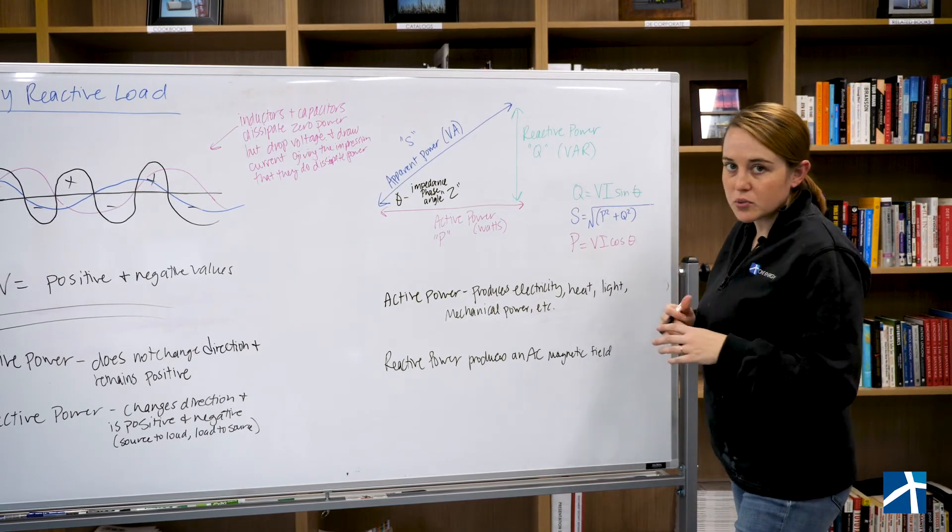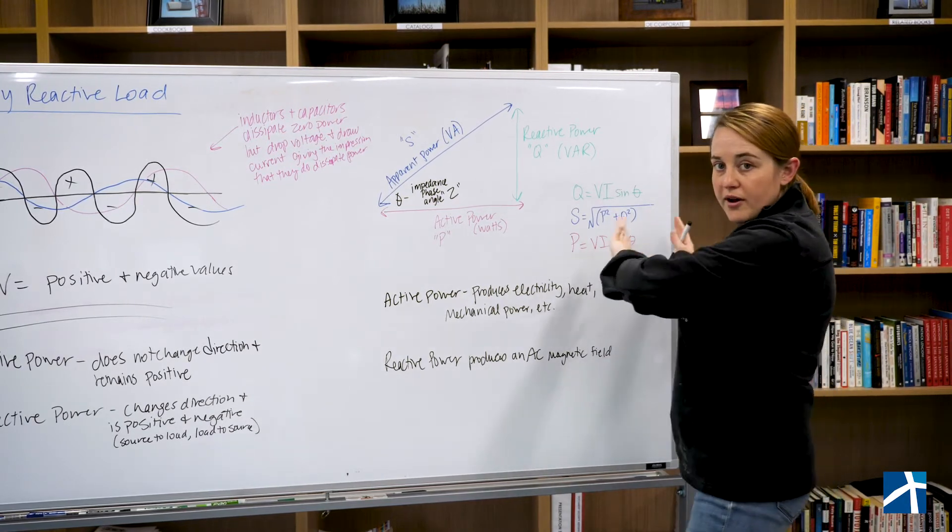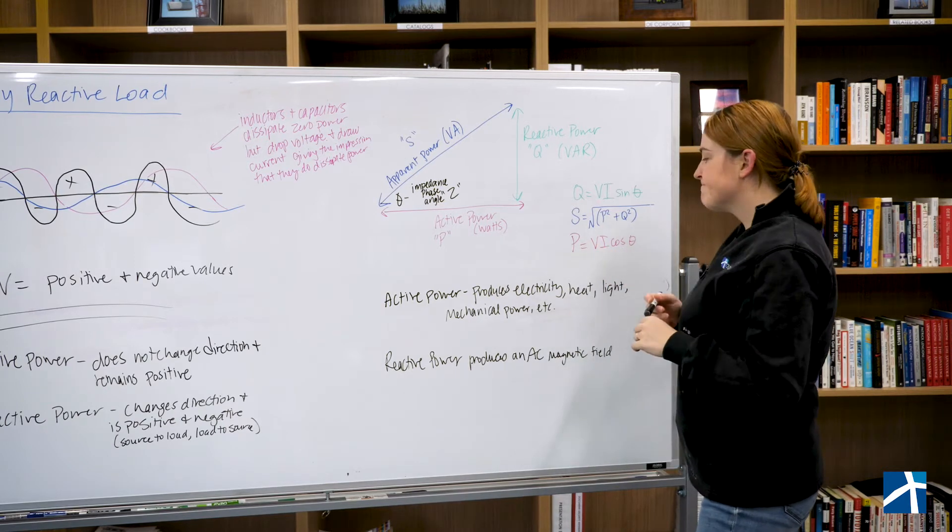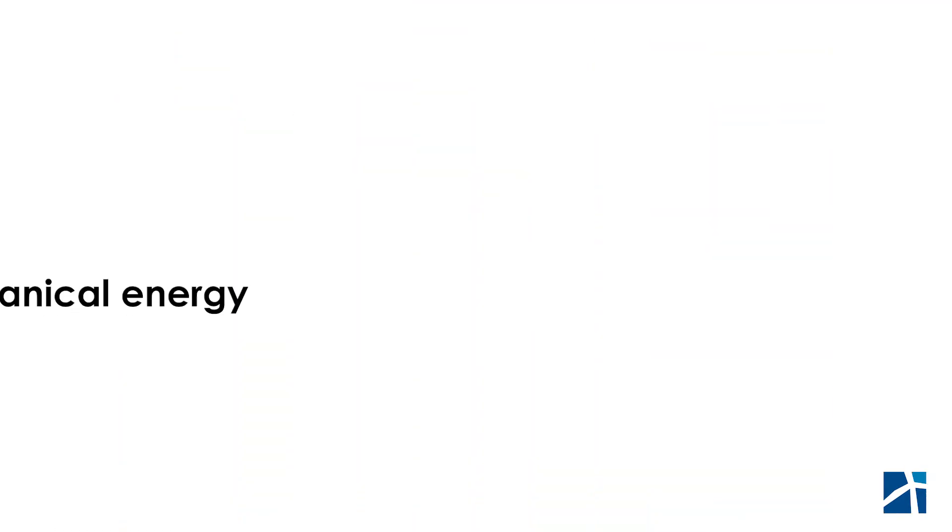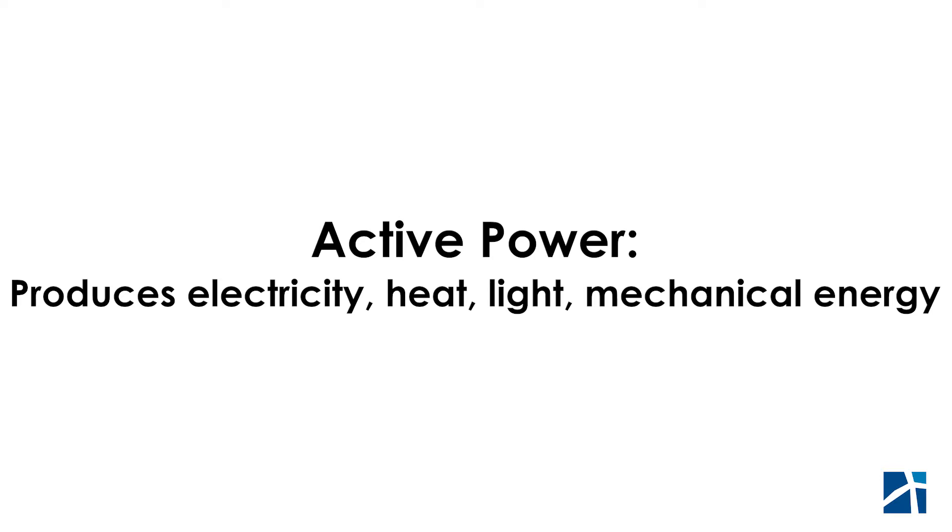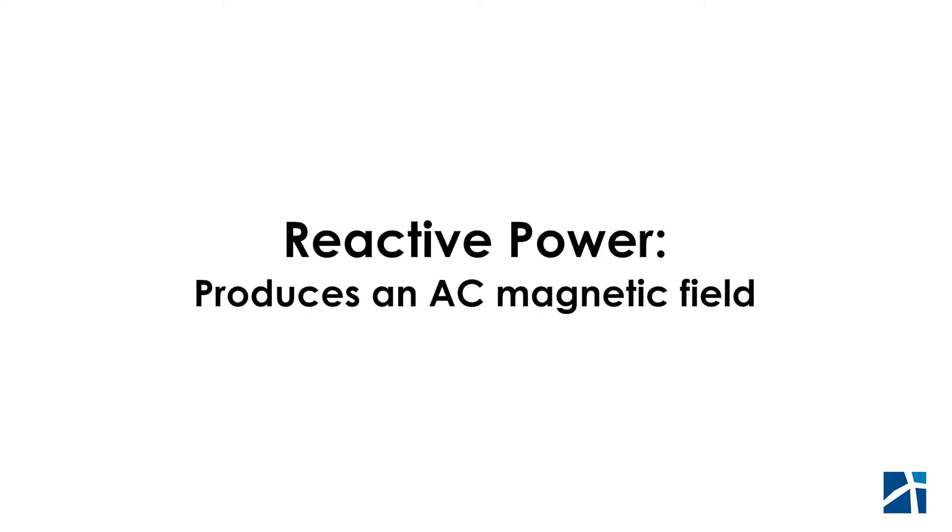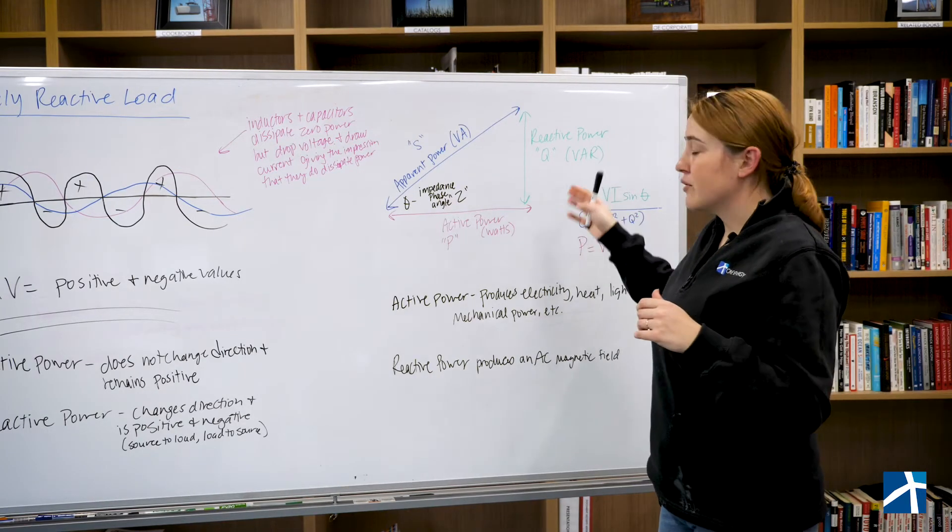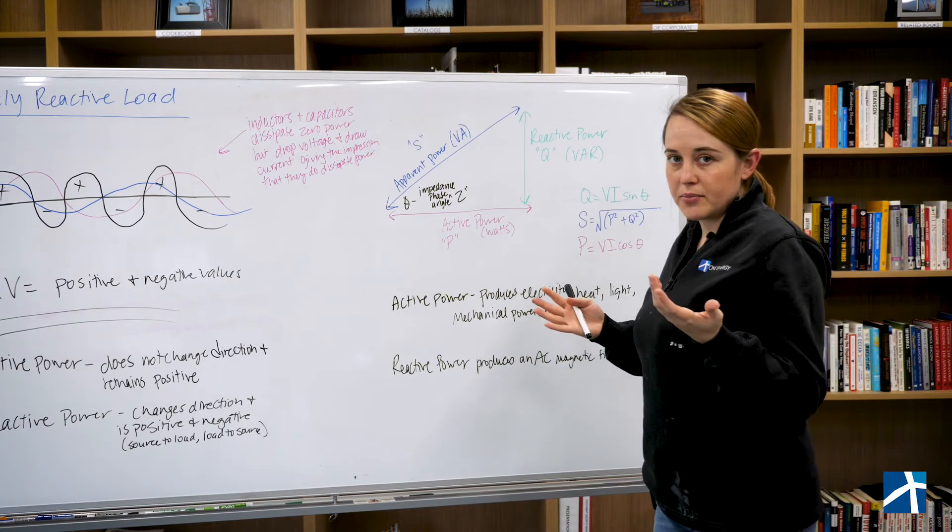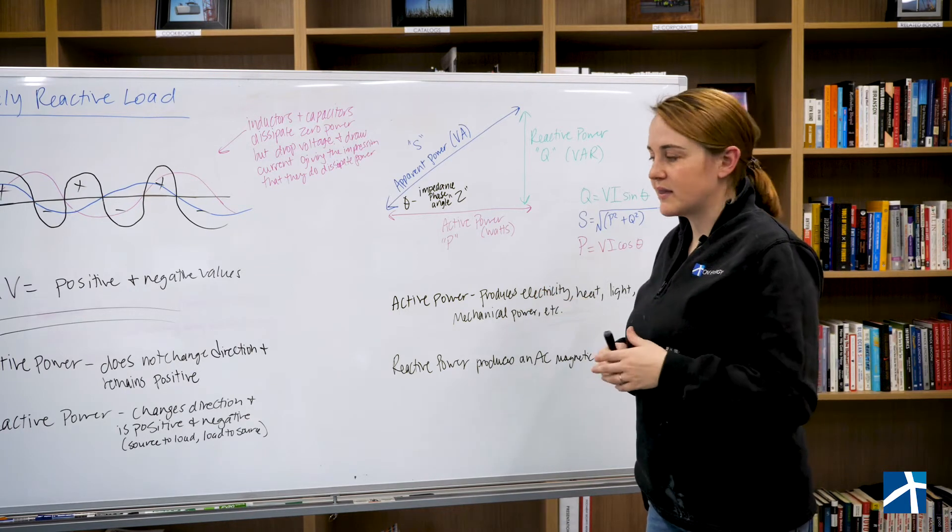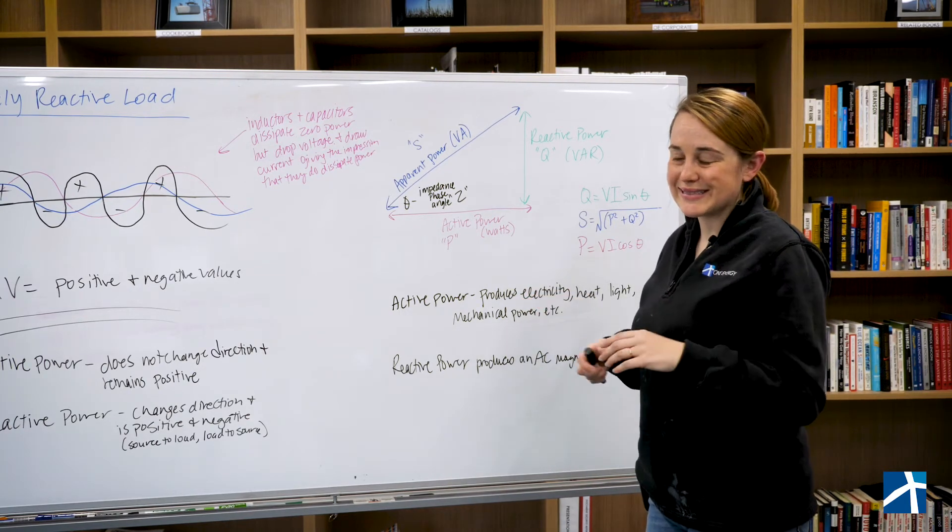So you can use trigonometry and you can kind of solve for one another. These are some formulas. We're not going to go through them. This is above and beyond what we want to do today. But just to reiterate, active power produces electricity, heat, light, mechanical energy, and reactive power produces an AC magnetic field. And so active power, apparent power, and reactive power are only applicable in AC settings. They are not applicable at all in a DC setting.